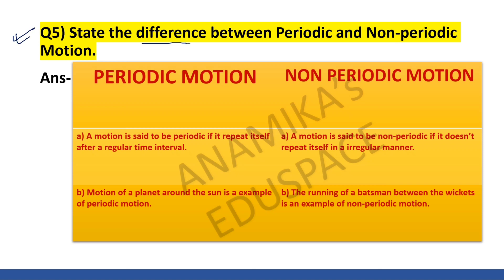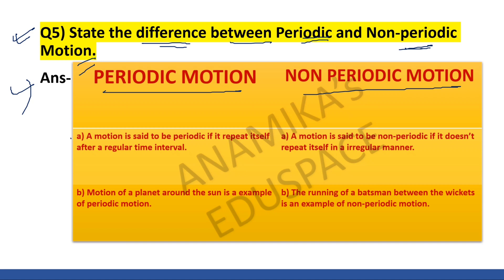Question number five: state the differences between periodic and non-periodic motion. Periodic motion — a motion is said to be periodic if it repeats itself after a regular time interval. Non-periodic motion — a motion is said to be non-periodic if it does not repeat itself and occurs in an irregular manner.